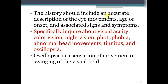The history should include an accurate description of the eye movement, age of onset, and associated signs and symptoms. Specifically, inquire about visual acuity, color vision, night vision, photophobia, abnormal head movement, tinnitus, and oscillopsia. Oscillopsia is a sensation of movement or swinging of the visual field.